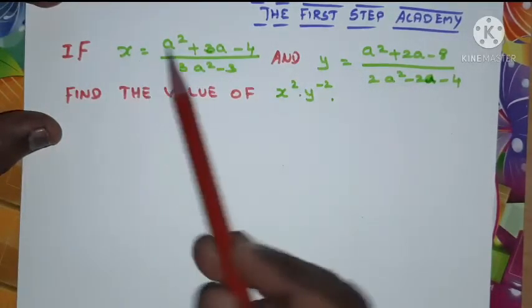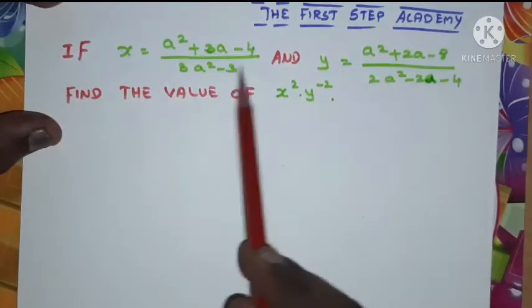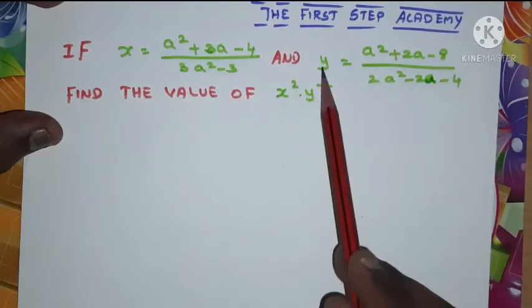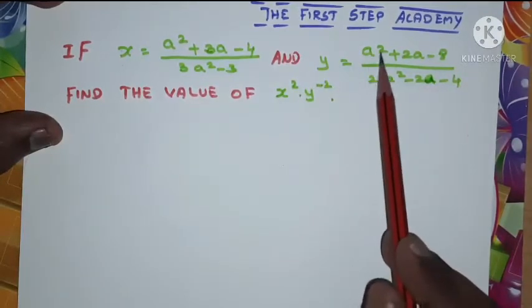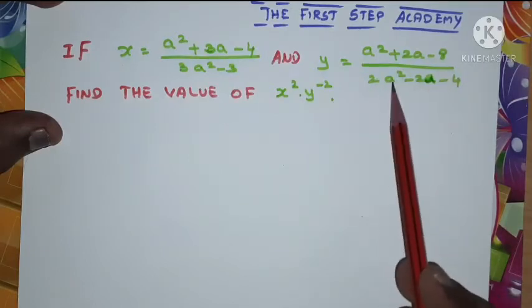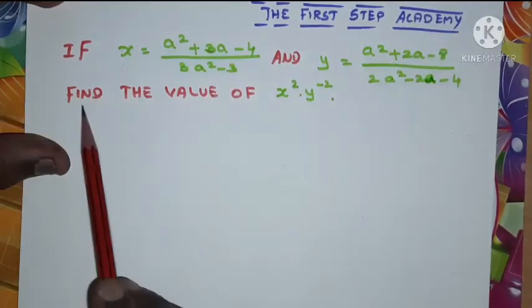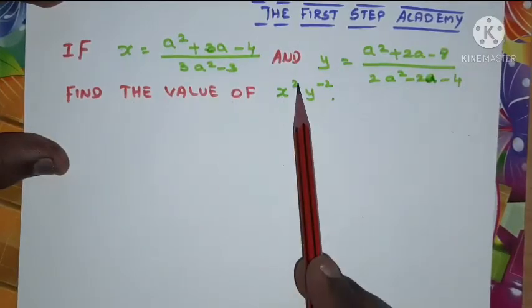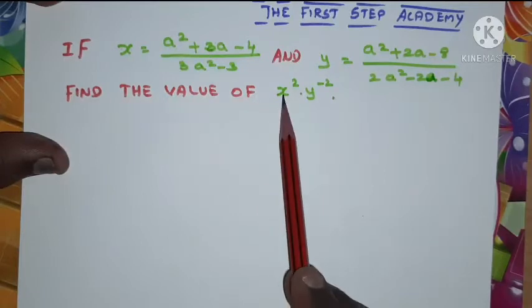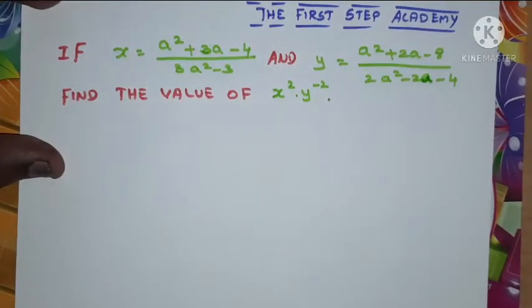If x is equal to (a² + 3a - 4) divided by (3a² - 3), and y is equal to (a² + 2a - 8) divided by (2a² - 2a - 4), find the value of x² · y⁻².